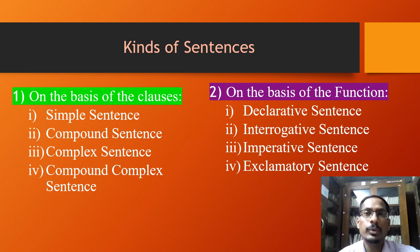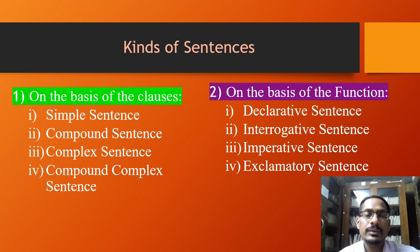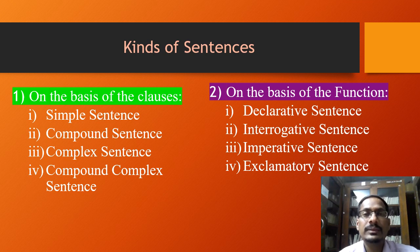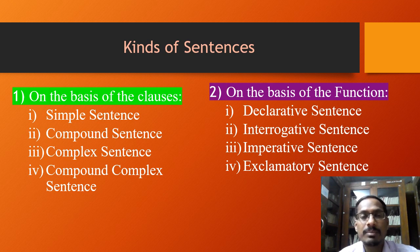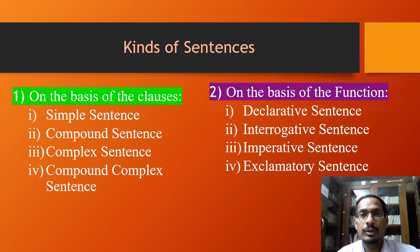Sentences can be grouped in two different ways: according to the number of clauses they contain, and also according to the use they are put to. Clauses are groups of words containing a subject and a finite verb, which appear not independently but as part of a larger sentence. According to the number of clauses, there are four types of sentences: simple sentence, compound sentence, complex sentence, and compound complex sentence.